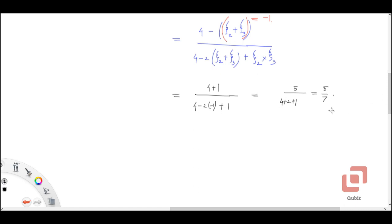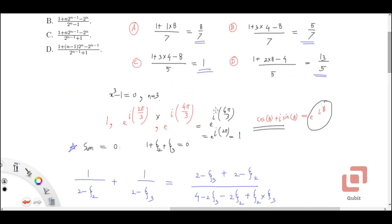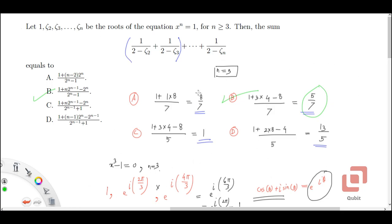So the expression for n equal to 3 evaluates to 5/7, and now let's go back to the options and check. The correct option is option B because it gives us the value 5/7, and hence option B.